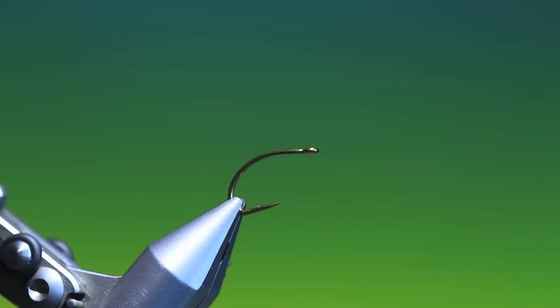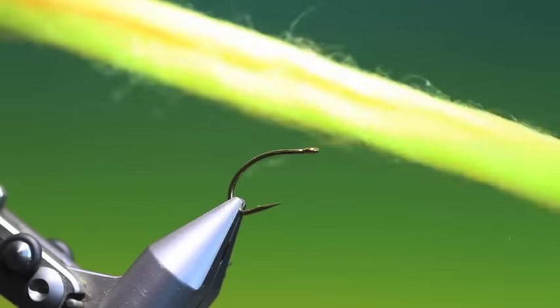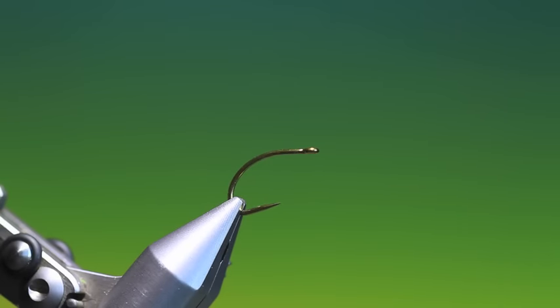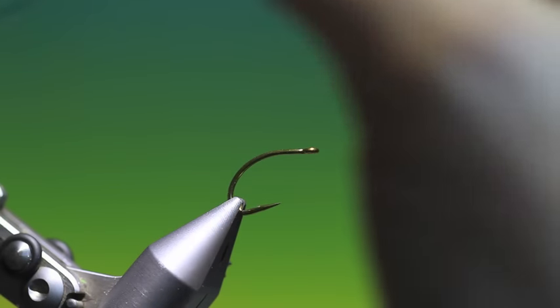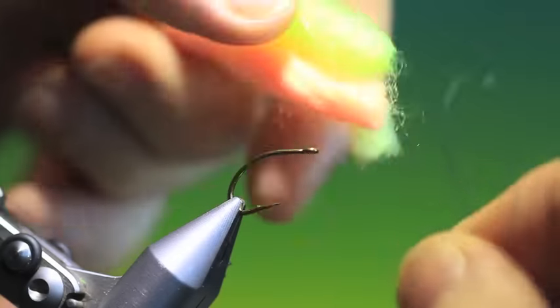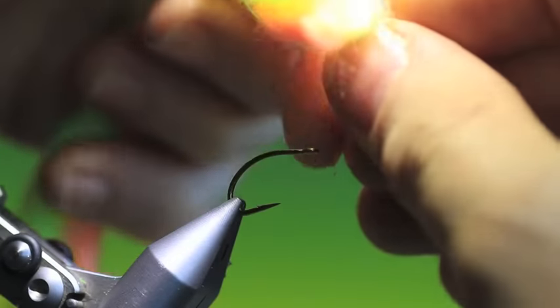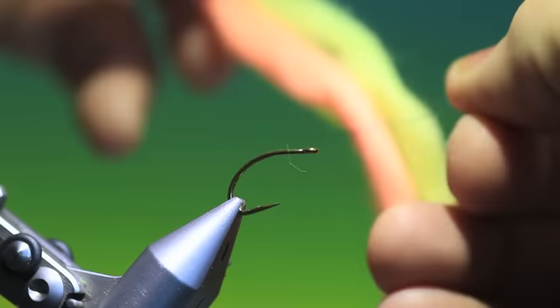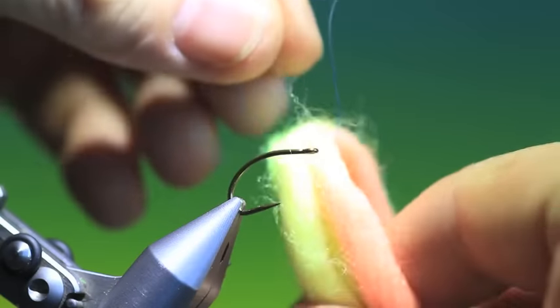So what you need is three strands of Glowbug yarn in different colors if you wish, depending on what you want to do. You take your threader and you place it over your Glowbug yarn into the center. Match up the ends.